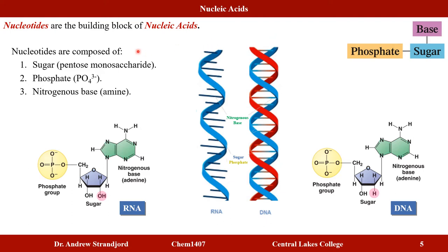Nucleotides are composed of subunits. Each has a pentose monosaccharide sugar. For RNA, the sugar has a hydroxyl group at carbon number two. For DNA, the sugar is very similar but does not have a hydroxyl at carbon number two. Each nucleotide also has a phosphate group and a nitrogenous base, which is an amine containing several nitrogen groups — for example, adenine.